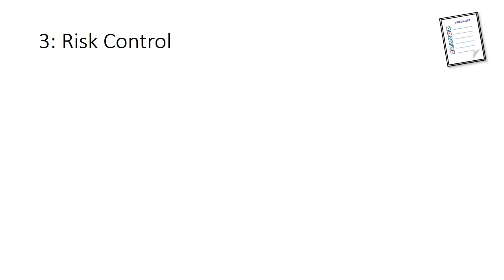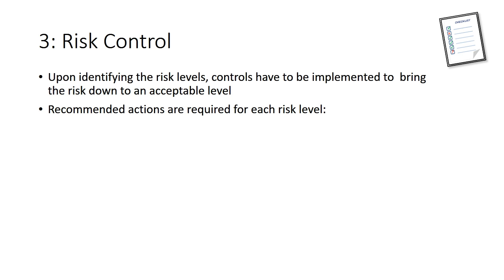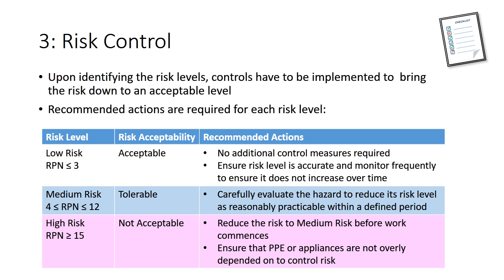Upon identifying the risk levels, controls must be implemented to bring the risk down to an acceptable level. Recommended actions are required for each risk level as shown in the table. Low risk is considered acceptable, requiring no additional control measures, though it should be monitored frequently to ensure it does not increase over time. Medium risk is tolerable, and the hazard should be reduced within a defined period. High risk is not acceptable, and the risk must be reduced to medium or lower before commencing work.